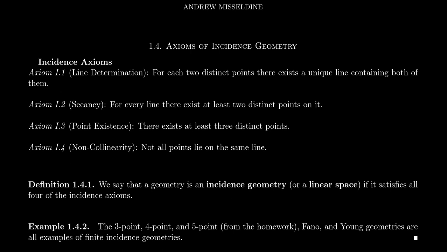Hilbert categorized his axioms of Euclidean geometry into various families. We have the incidence axioms, which we're going to talk about in this video. There's the betweenness axioms, sometimes called the order axioms, which we will talk about later in this lecture series. The congruence axioms, the continuity axiom, plus also the parallel axioms — all of which we'll talk about later as we build towards Euclidean geometry. In this lecture, I want to establish the four axioms of incidence, and essentially every geometry we talk about in the future will be an incidence geometry. The only exception will basically be counterexamples for statements about incidence geometry.